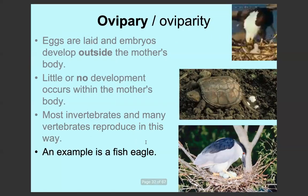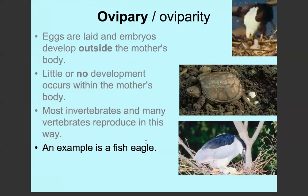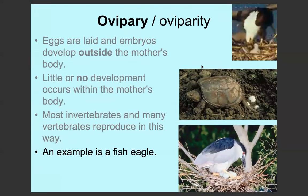An example of an oviparous animal is a fish eagle. For oviparity, it can involve external fertilisation because the eggs develop outside the body, but it can also involve internal fertilisation — for example in the case of birds or tortoises and turtles, where internal fertilisation happens and then the mother or female lays their eggs.